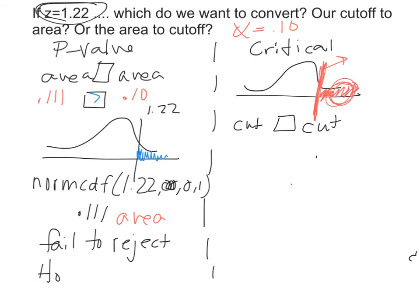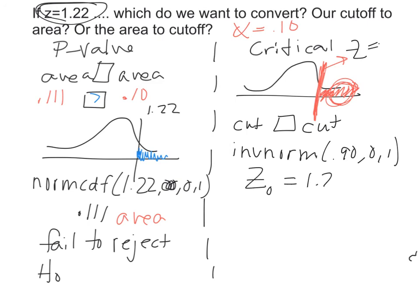We need to find the critical z-score where 10% of the area is in the right tail. That means 90% of the area is to the left, so we use invNorm with 0.90. That gives us a critical z-value of 1.28. So instead of alpha = 0.10 (an area), we now have a cutoff of 1.28.